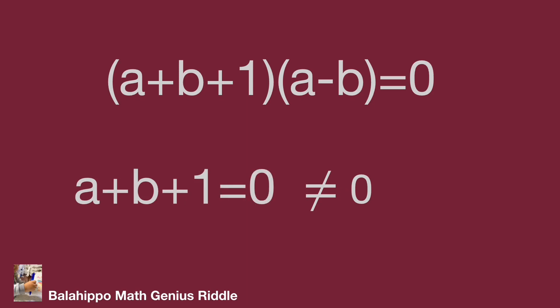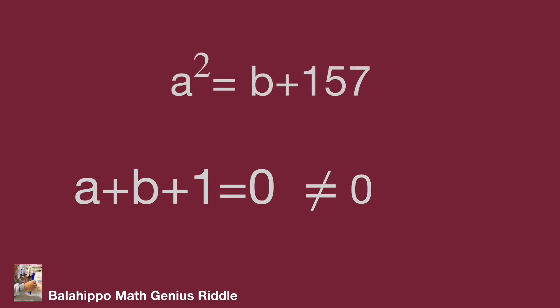After that, find the a b value through a squared equal to b plus 157. b equal to minus 1 minus a.